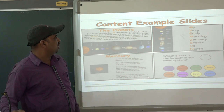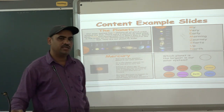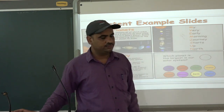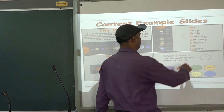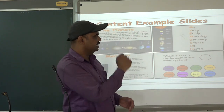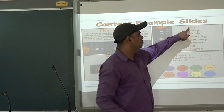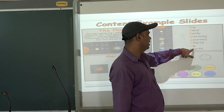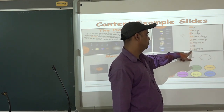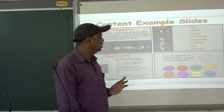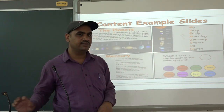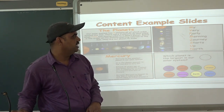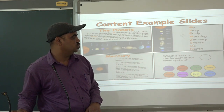If you want to remember all the names of the planets, here is one trick. There is a sentence: 'My Very Early Morning Journey Start Up North.' The first letters stand for Mercury, Venus, Earth, Mars, Jupiter, Saturn, Uranus, Neptune — M, V, E, M, J, S, U, N. This trick can be used to remember the names of the planets. One more trick will be shared in the next video.